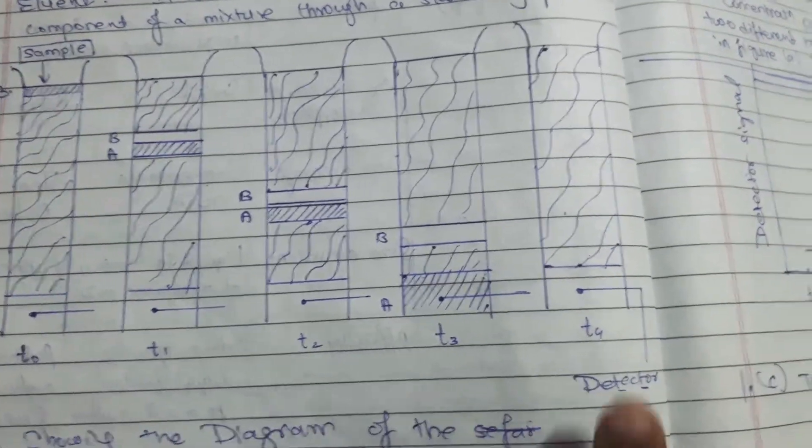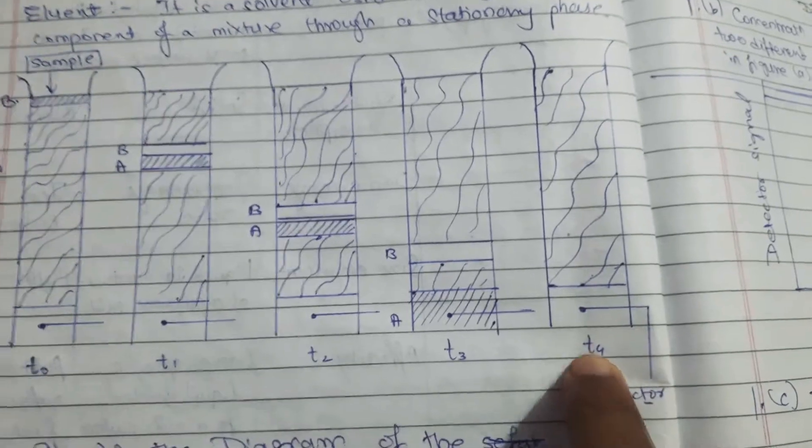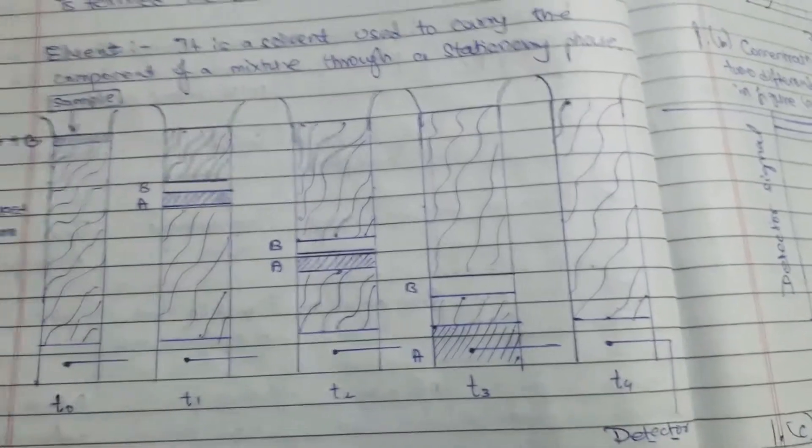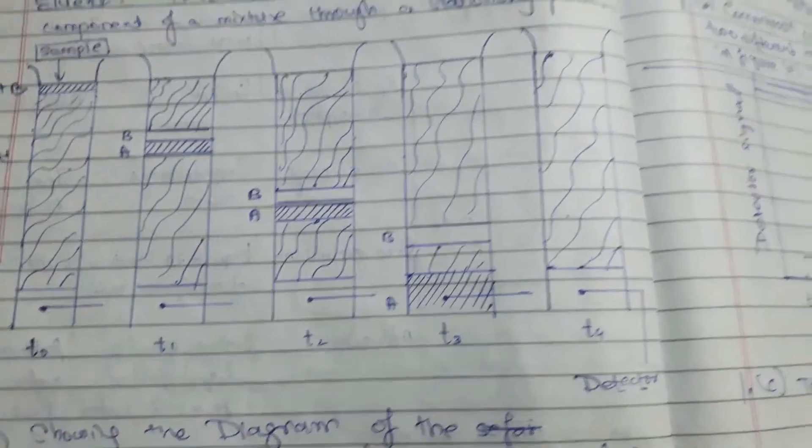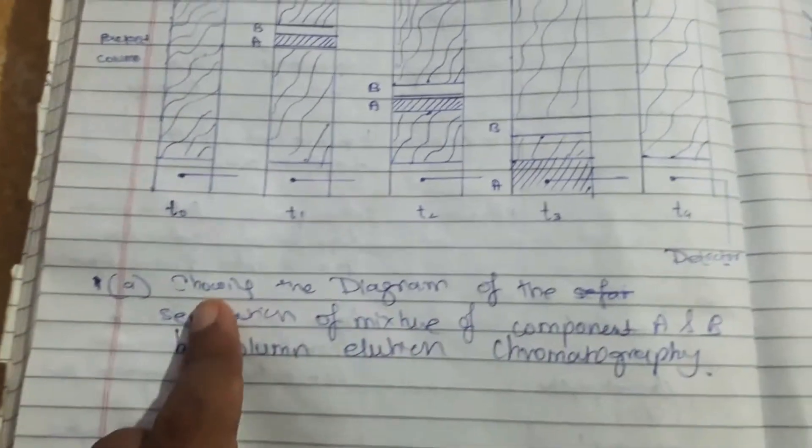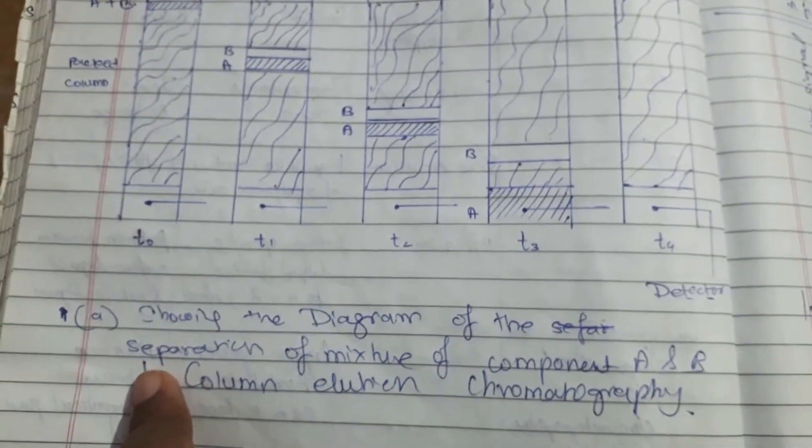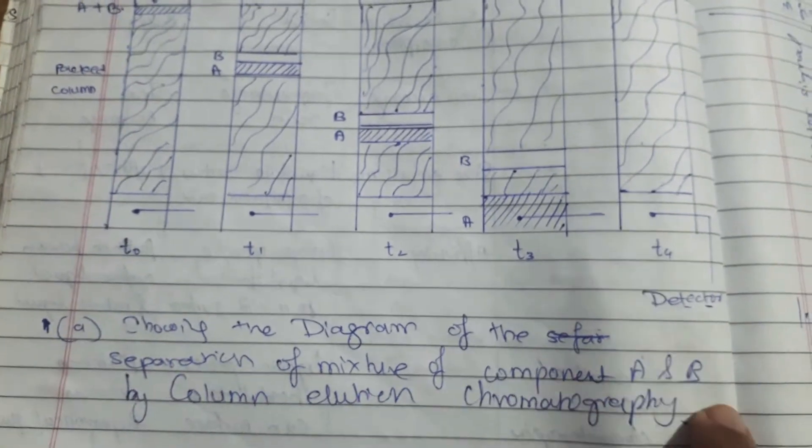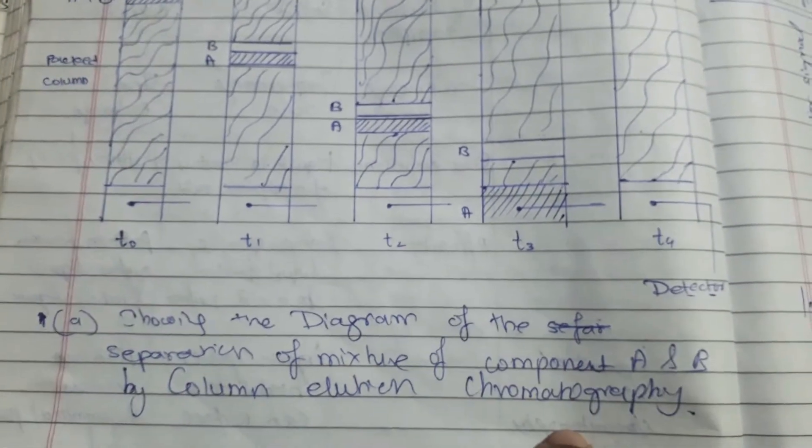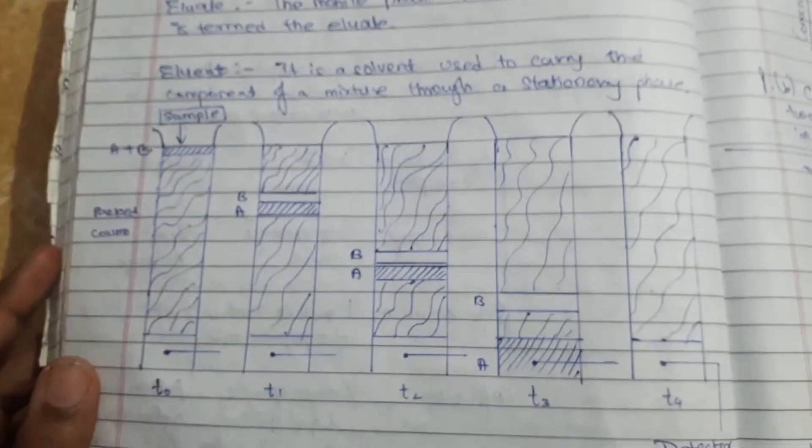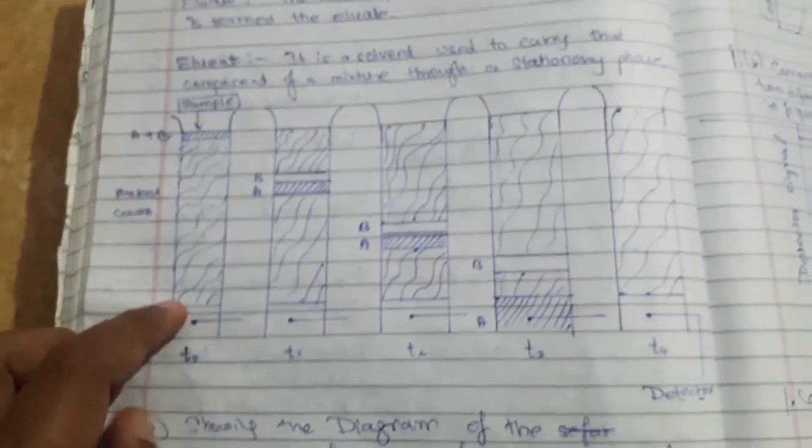And at t4, component B will come out of the column. This diagram will be in the reference book.